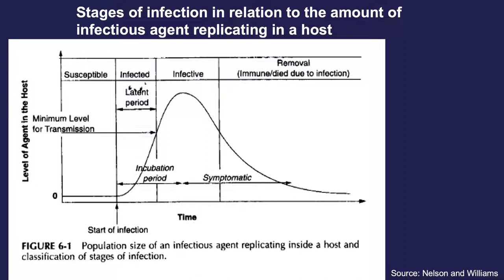For example, in the case of SARS-CoV-2, people can be very infectious immediately before symptoms occur as well as while they have symptoms. But with Ebola virus, people are not infectious before the onset of symptoms. For treatable infections, treatment can sometimes reduce both the infectious period and the symptomatic period.